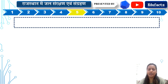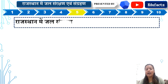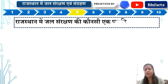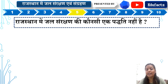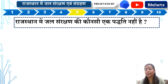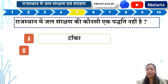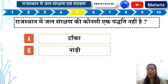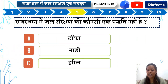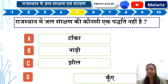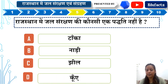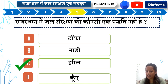Question number 5: Rajasthan mein jal sanrakshan ki kaun si ek paddhati nahin hai? Options are: A — Taka, B — Nadi, C — Jheel, D — Kuen. Iska right answer hai Option C — Jheel.